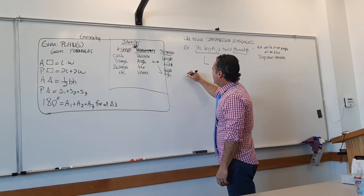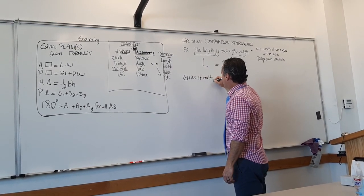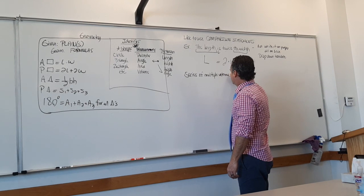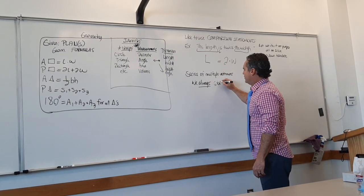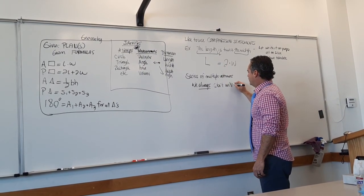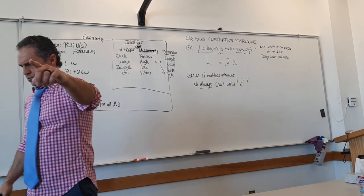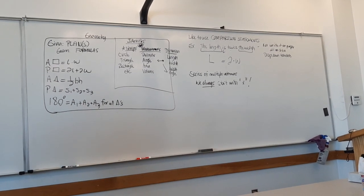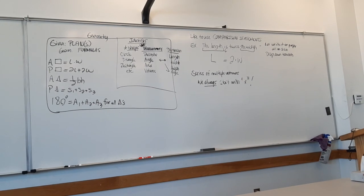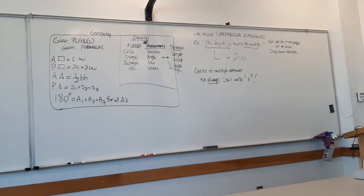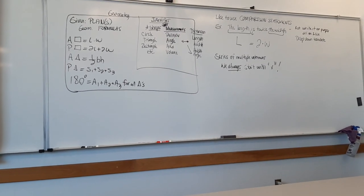The second thing: whenever you're given a series of multiple unknowns, we always, always start with x. Everybody say this: we always start with x. We always start with x. What do we start with? X. And don't you forget it — that's going to come back to help you or haunt you if you don't remember it. What do we start with? X. When? Always.